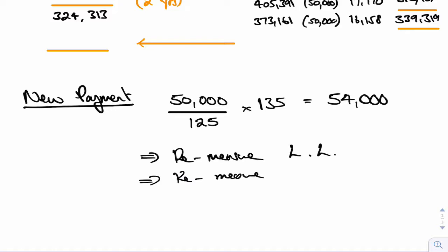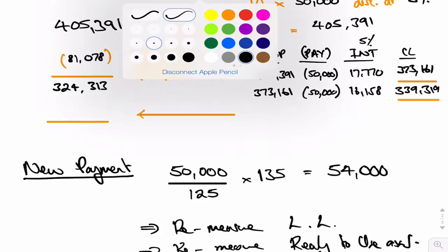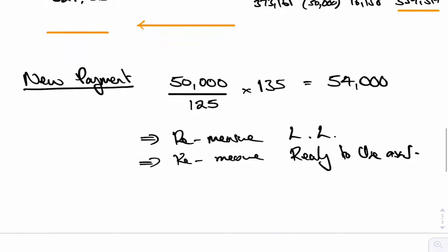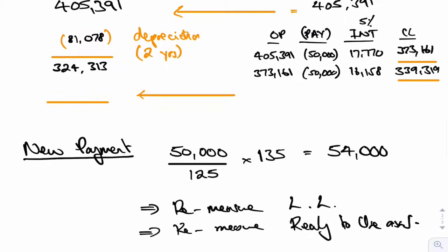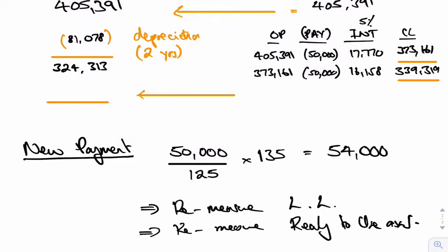And because you've re-measured the lease liability, you have to re-measure the right-to-use asset as well. Okay, so I can tell you then to work out what eight lots of the new 54,000 would be, discounted down at 5%, I can tell you that that actually comes to 366,464. So that's the new 54,000 for eight years, discounted down at 5%.